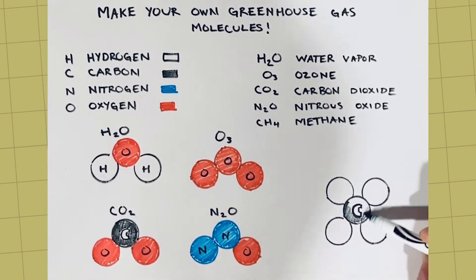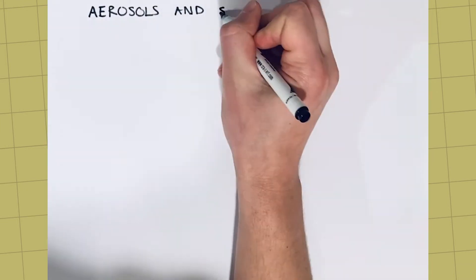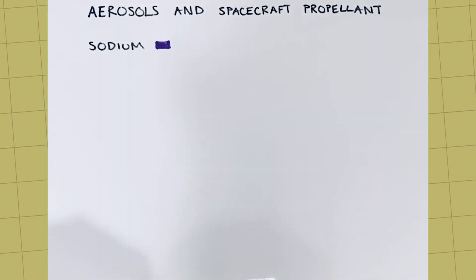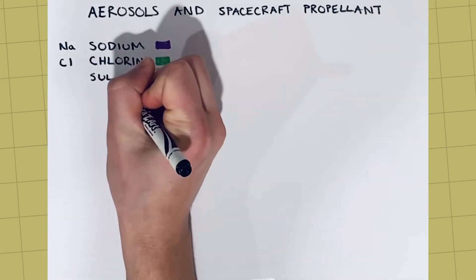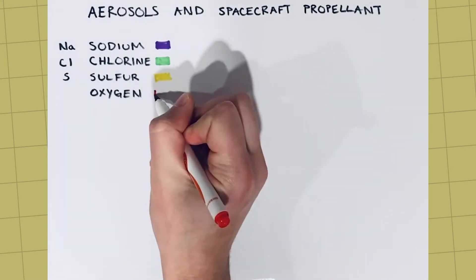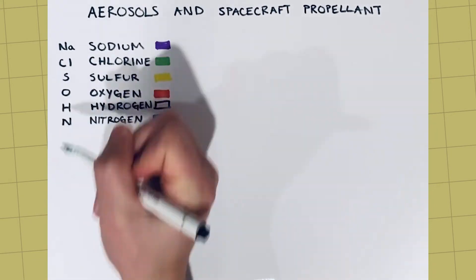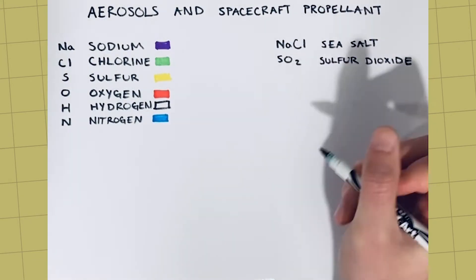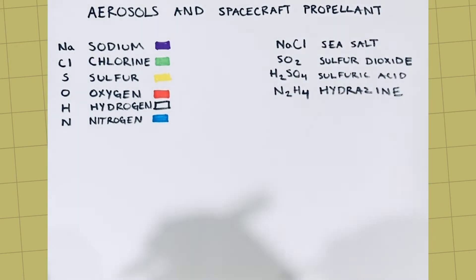Now use your materials to create the greenhouse gases. Want to make more molecules? The atoms we'll be using are sodium, chlorine, sulfur, oxygen, hydrogen, and nitrogen. The molecules we will be making are sea salt, sulfur dioxide, sulfuric acid, and hydrazine.